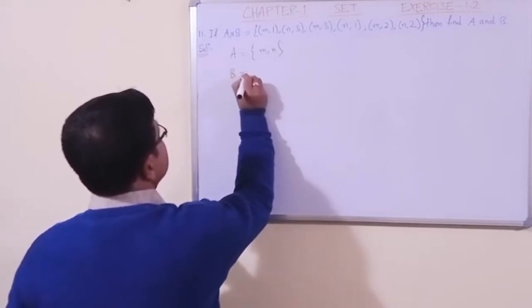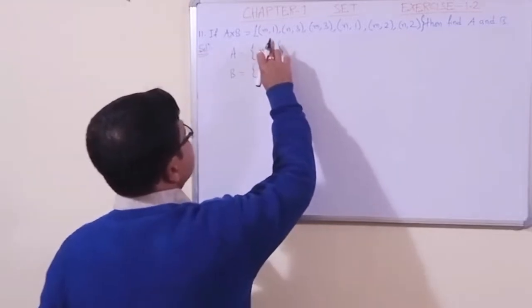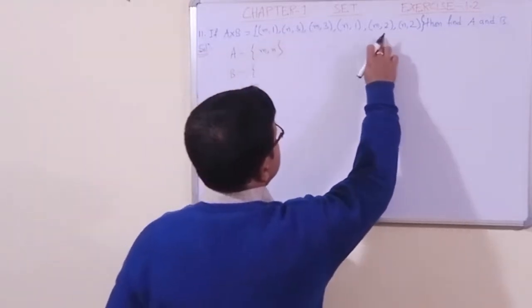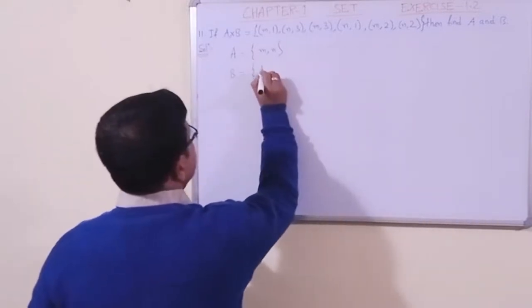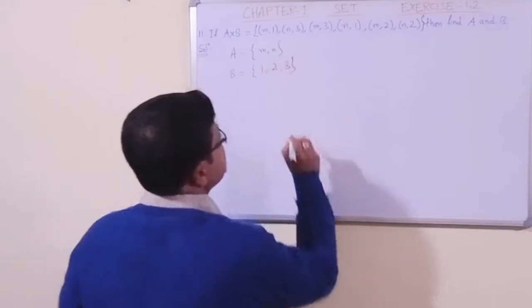About set B, we see the second coordinates. We shall observe the second coordinates. We can see one, three, three, one, two, two. So in order we can write one, two, three. Okay, this is very simple for us.